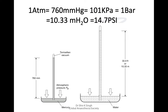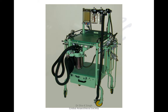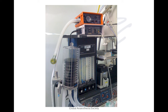We also need to know a few conversion factors: one atmosphere equals 760 mmHg, which equals 101 kPa, which is one bar, equal to 10.33 meters of water, or 14.7 psi. Over the years, anesthesia machines have evolved from simple pneumatic machines to complex electrical, mechanical, and pneumatic multi-component workstations.